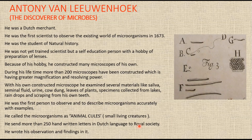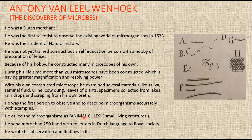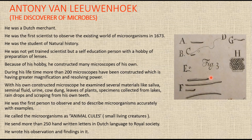Around the year 1674, he described them as 'very little animalcules,' which we now identify as protozoa. His eighth letter, written on October 9, 1676, contained a detailed description of his microscope observations, accompanied by accurate sketches. In his own words from the year 1675, he wrote: 'I discovered living creatures in rain water which had stood but a few days in a new earthen pot glazed blue within.'